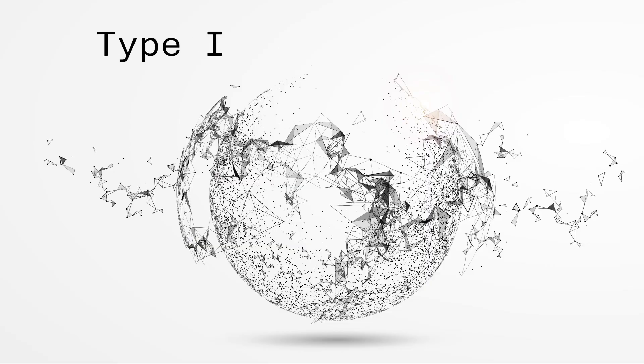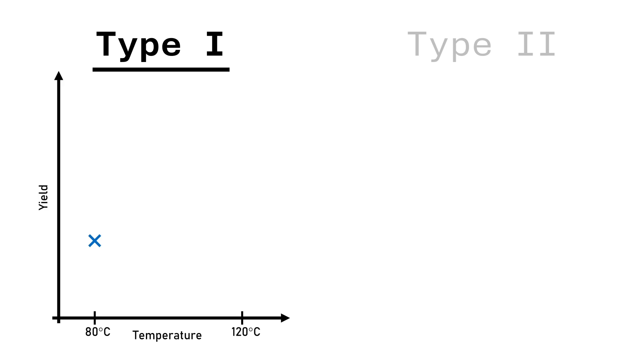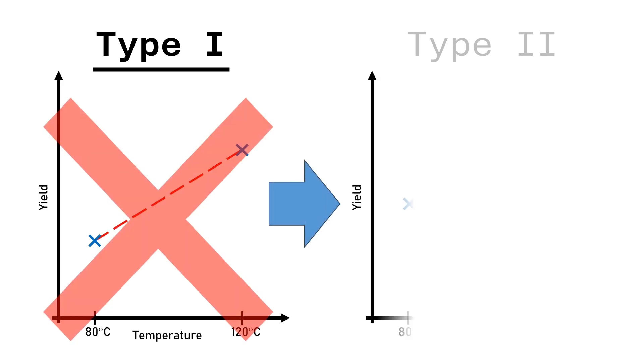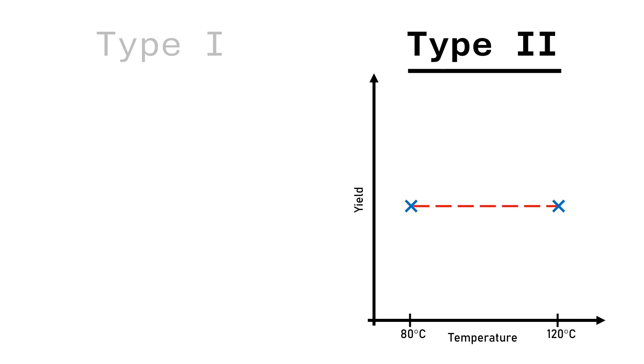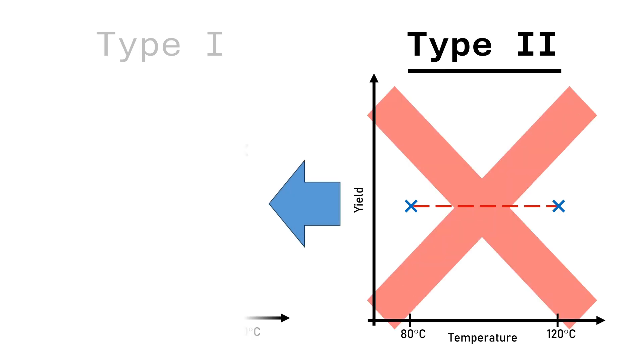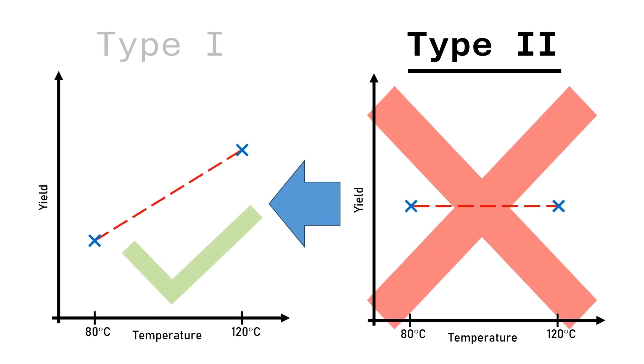And in the world of statistics there are two errors that you can make. If you detect an effect that in reality isn't there, that's a type 1 error. If you do not detect an effect that in reality is there, that is what is called a type 2 error. Both errors are annoying and they result from variations in your experiment that you cannot control.